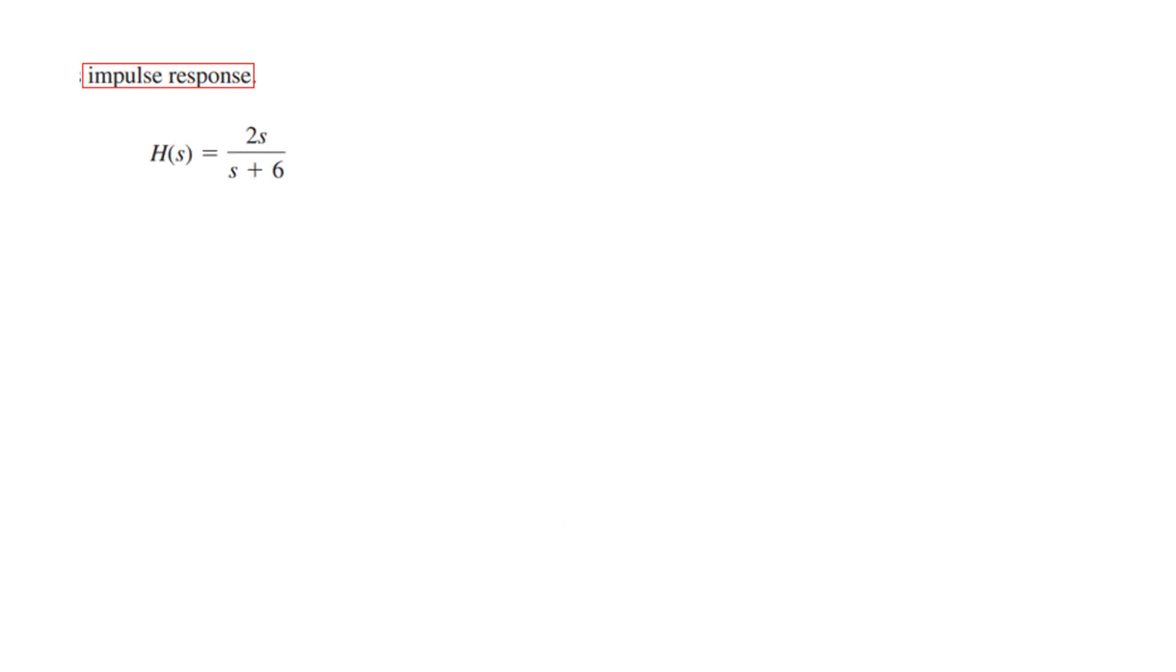And now the impulse response. We already know the impulse response in Laplace domain or s domain. But since the numerator is greater than the denominator, it is 2s versus s, so in this case also we need to divide. So 2s divided by (s+6), we get 2 and remainder minus 12. So this can be written as 2 whole minus 12 over (s+6).